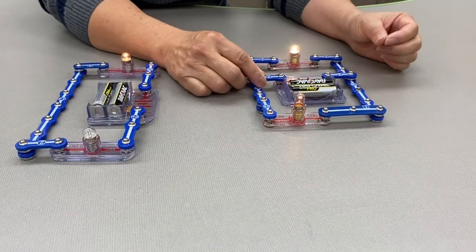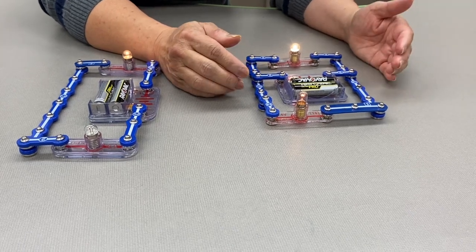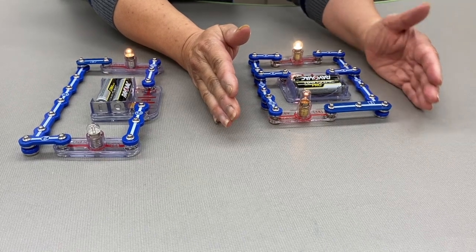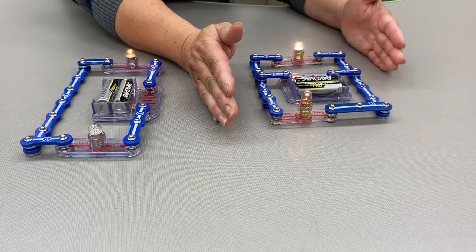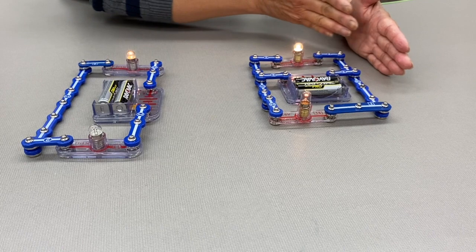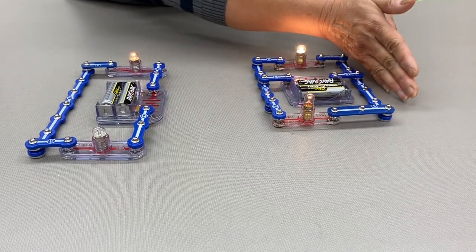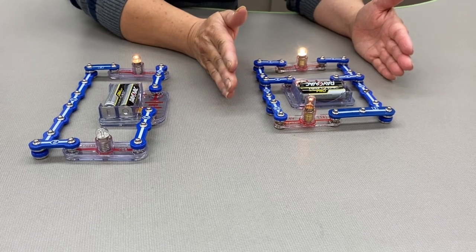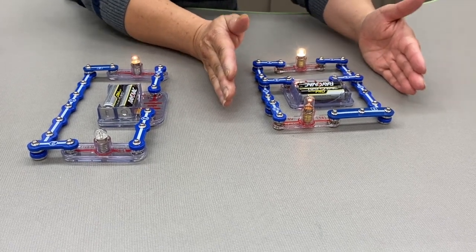So one way to explain this is kind of like a toll booth. If you have cars driving into toll booths, if all the cars lined up at one toll booth, then the number of cars going through the toll booth is limited. Whereas if you open up more toll booths, more cars can go through quicker,